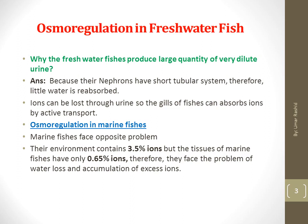Now we will discuss the osmoregulatory mechanism in marine fishes. Marine fishes face the opposite problem: their environment contains 3.5% ions, but the tissues of marine fishes have only 0.65% ions. Therefore they face the problem of water loss and accumulation of excess ions. They have different adaptations to compensate for water loss, and they eliminate excess ions by excretion, defecation, and active transport through their gills. The nephrons of marine fishes possess small glomeruli and long tubule systems, so less blood is filtered and water is efficiently reabsorbed from the nephrons.